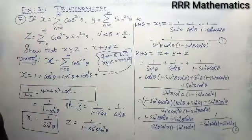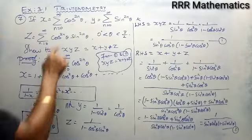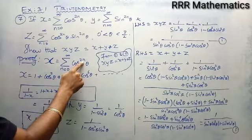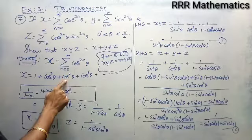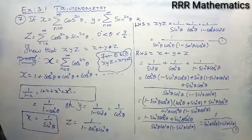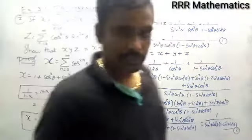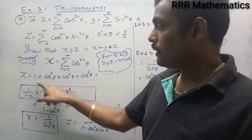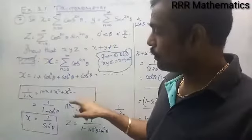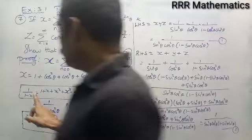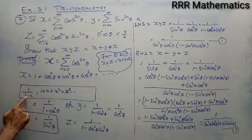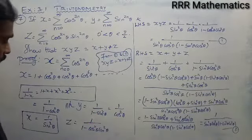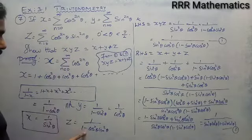To recap: x equals sigma n=0 to infinity cos^(2n) theta. Replacing n as 0, 1, 2, 3 gives 1 plus cos square theta plus cos power 4 theta plus cos power 6 theta, and so on. Using the binomial expansion of 1 divided by 1 minus x, which is 1 plus x plus x square plus x cube, and so on, with x equals cos square theta, I get x equals 1 divided by 1 minus cos square theta, that is 1 divided by sin square theta. Similarly, y equals 1 by 1 minus sin square theta, which is 1 by cos square theta. And z equals 1 divided by 1 minus cos square theta into sin square theta.